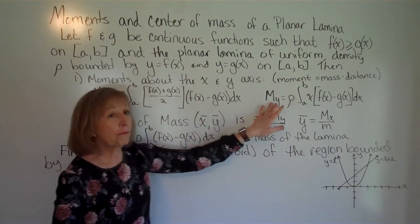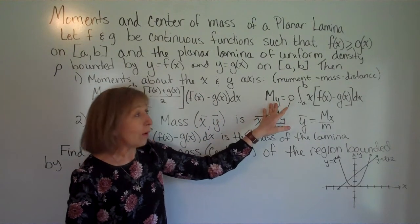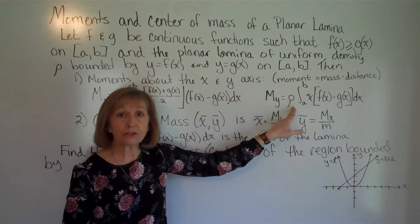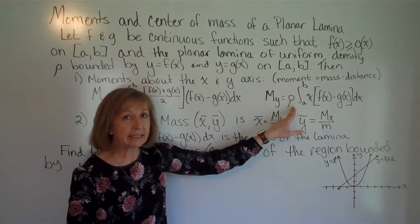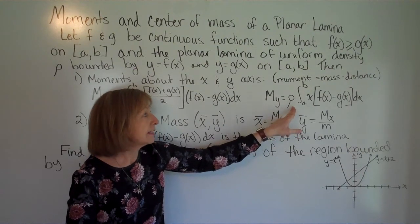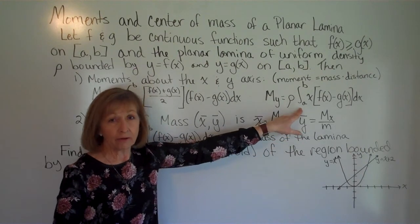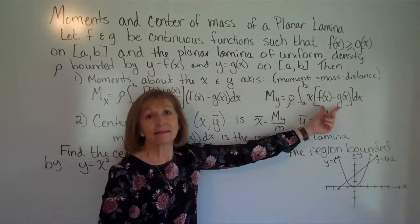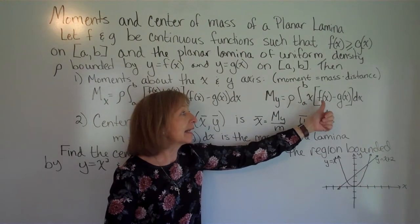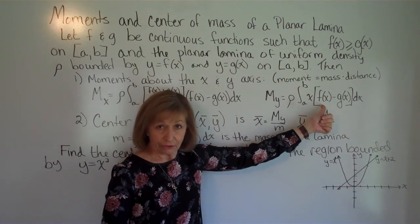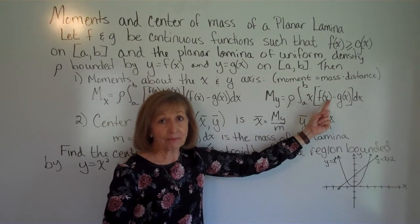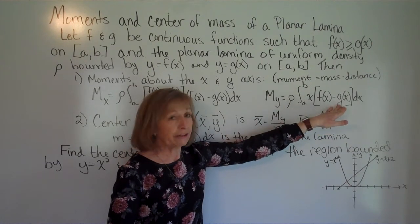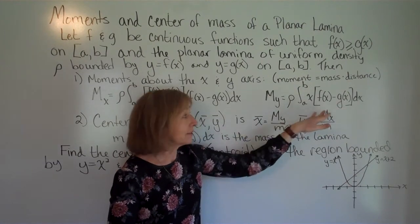The moment about the y-axis is your density rho times the definite integral from a to b of x times [f(x) − g(x)] dx.